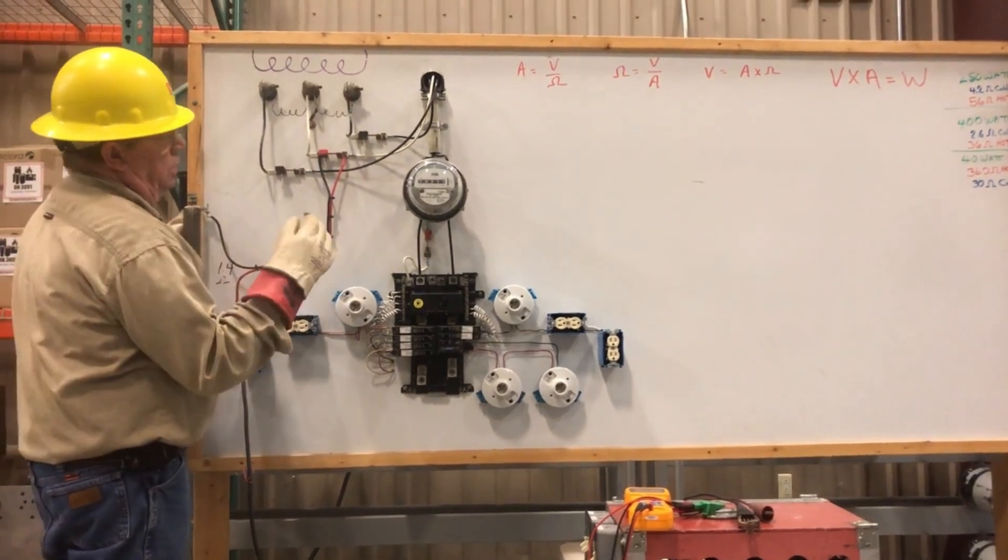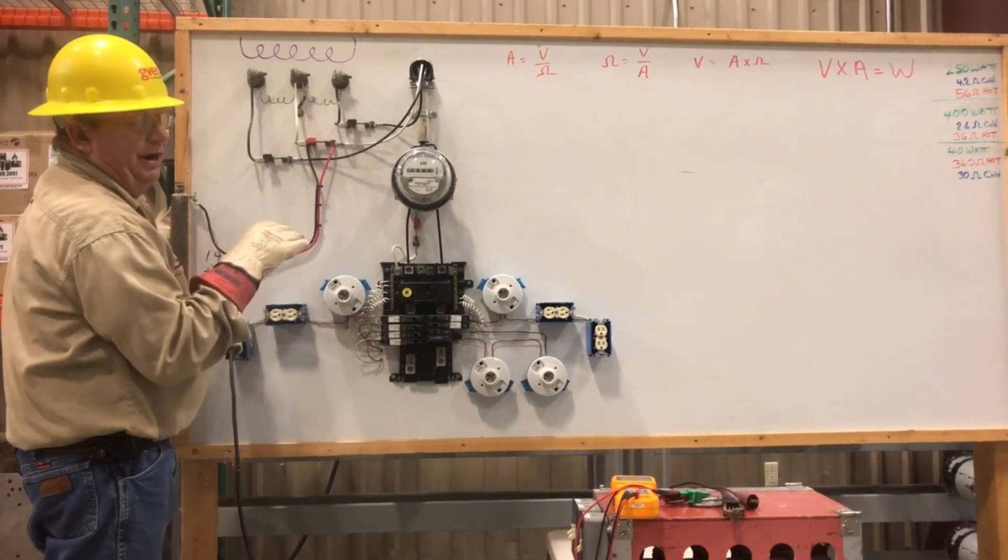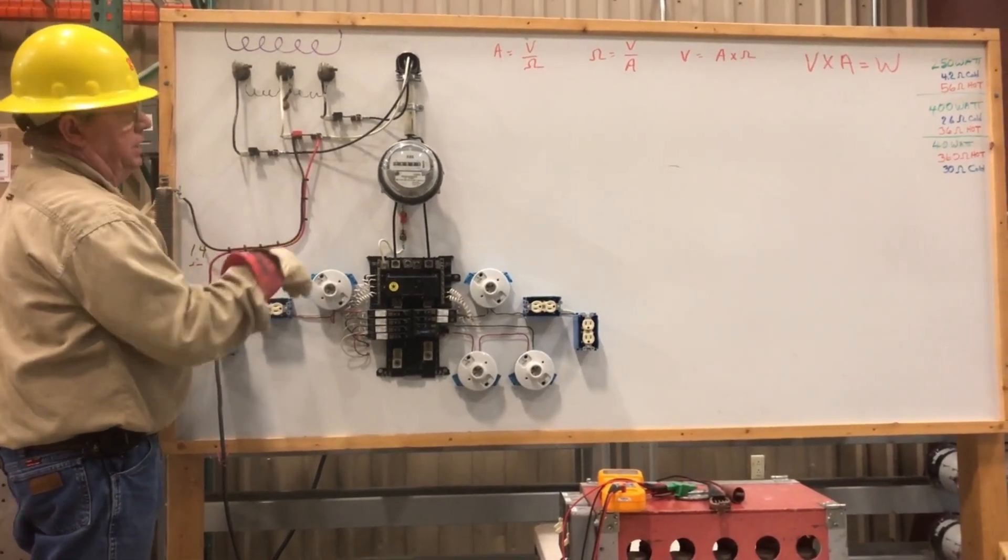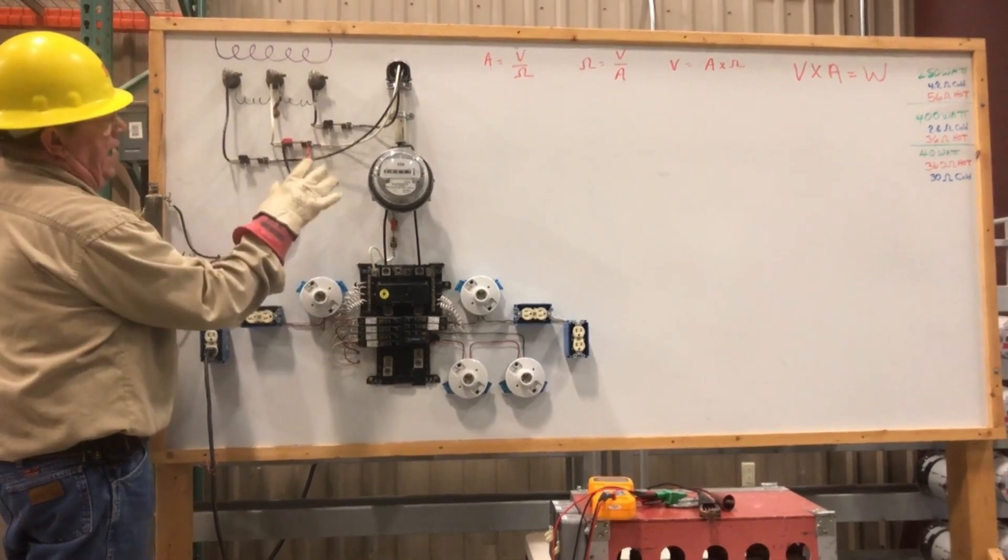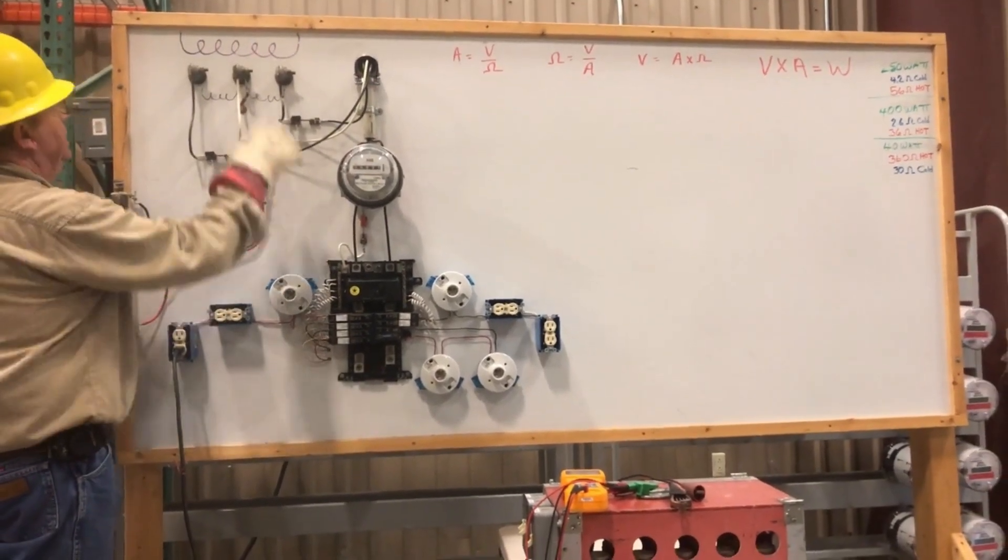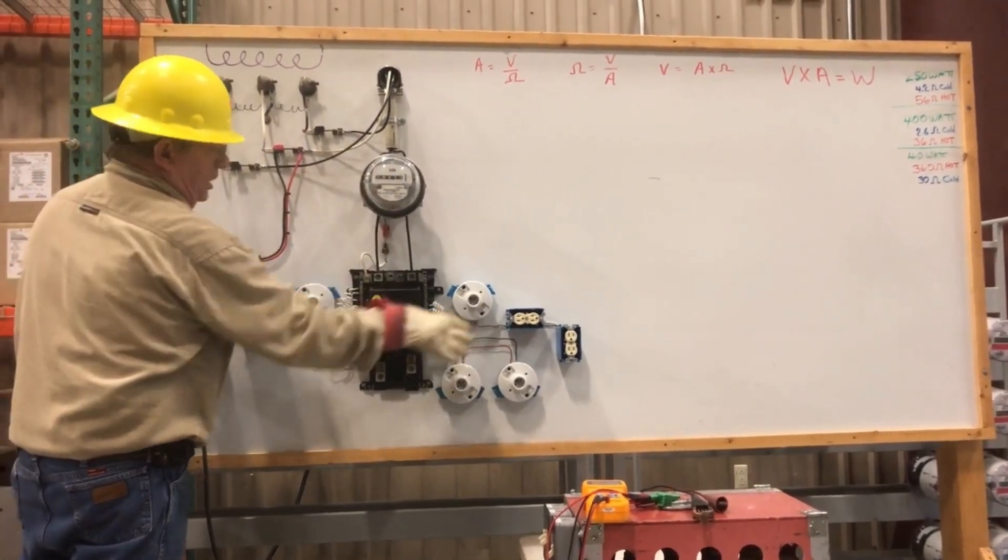Alright, today we're going to talk about how you would troubleshoot a bad secondary neutral problem. We had some great guys build this board for me, and then I added what's going to look like the utility transformer, then the riser service entrance, and then another.